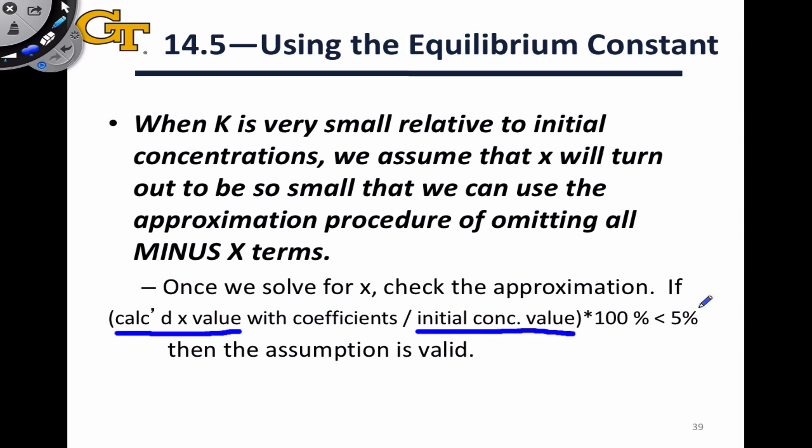Another sanity check that's even simpler to apply involves just looking at the calculated x value and its ratio to the initial concentrations. If that ratio is less than 5%, in other words, when you multiply by 100%, if you get a number less than 5, then the assumption is certainly valid. When you get in the range of 5 to 10% and above, you're starting to get dangerously close to a situation where the initial concentrations are on the order of K, and so we can't ignore x in those difference terms. Those differences are going to be significantly different from the initial concentrations.